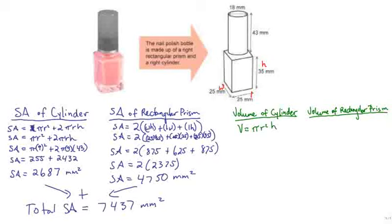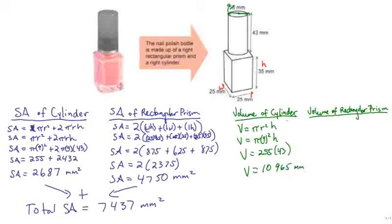Moving on to volume, we're going to calculate two volumes: first the cylinder, then the rectangular prism. The formula for the volume of a cylinder is V = πr²h. Our diameter is 18 mm, so our radius is 9 mm, and the height is 43 mm. Volume equals π × 9² × 43 = 255 × 43 = 10,965 mm³. Since this is volume, the units are cubed.